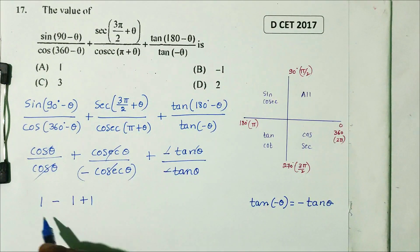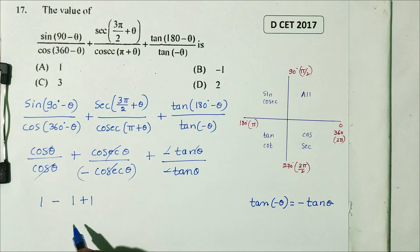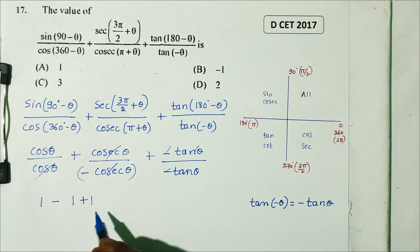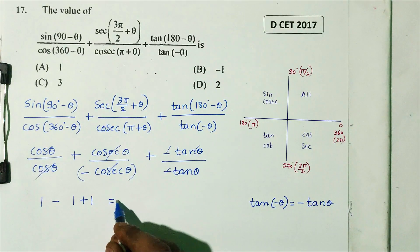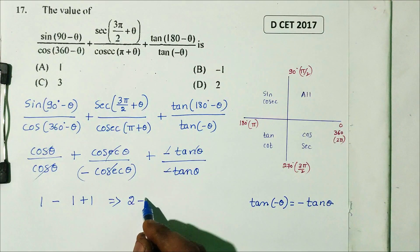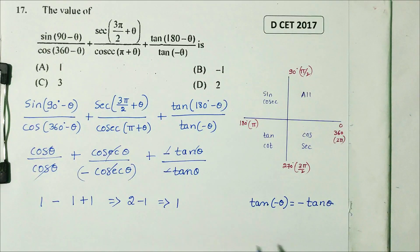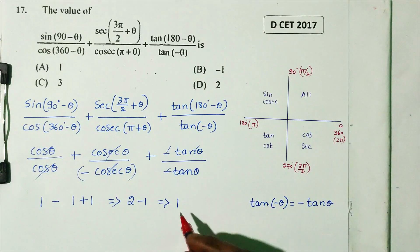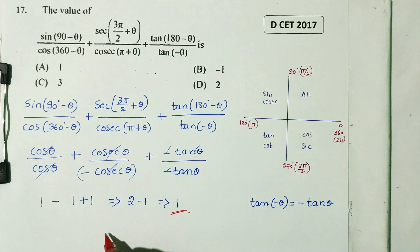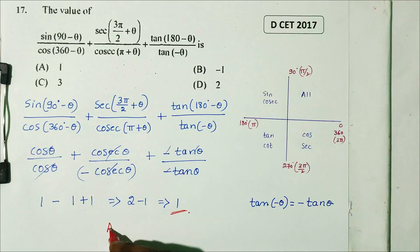After simplification, cosθ/cosθ cancels to 1, cosecant/cosecant cancels, and tanθ/tanθ cancels, leaving 1 plus 1 equals 2. Then 2 minus 1 equals 1. So the answer is option A.